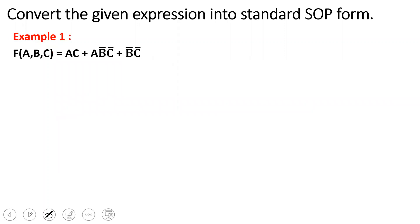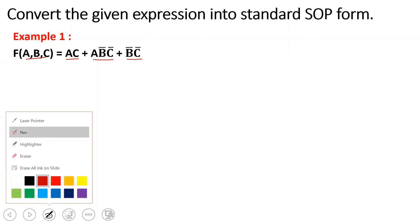F of ABC is equal to AC + AB̄C̄ + B̄C̄. Now, the question is F of ABC, which means the number of input variables is equal to 3. Here there are three terms: AC, AB̄C̄, and B̄C̄.